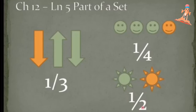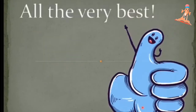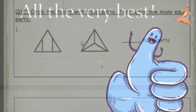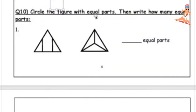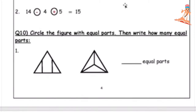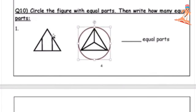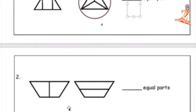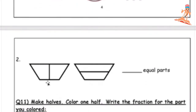Did you all understand? Yes! Good job, kids! Now circle the figure with equal parts, then write how many equal parts. If you see here, this figure has three parts but only this one has three equal parts, so how many equal parts are there? Three.